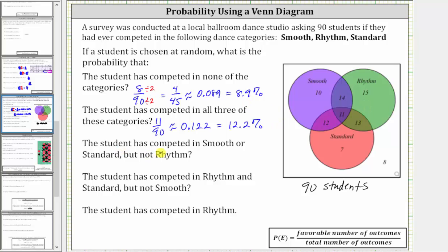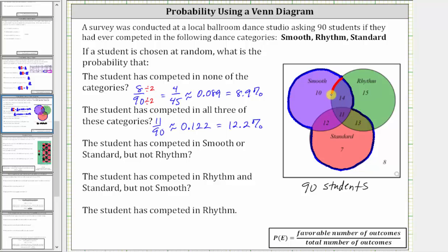Next, we want the probability the student has competed in smooth or standard, but not rhythm. Let's first determine the set that represents students that competed in smooth or standard, which is the union of the smooth and standard sets. All of these students competed in smooth or standard, but we're looking for those who competed in smooth or standard but not rhythm, which means we must remove the part of the set that also includes rhythm. If we remove this part of the set, it leaves us with the set here in red.